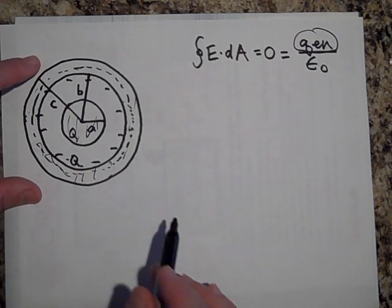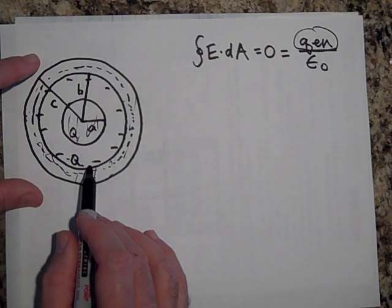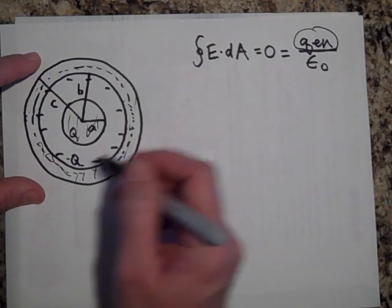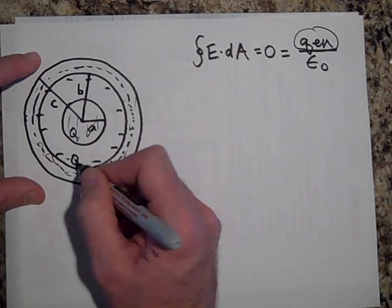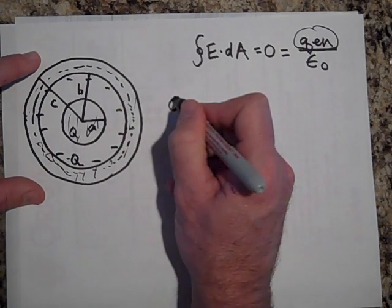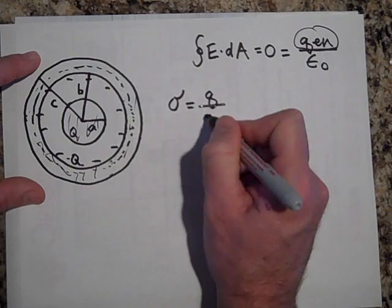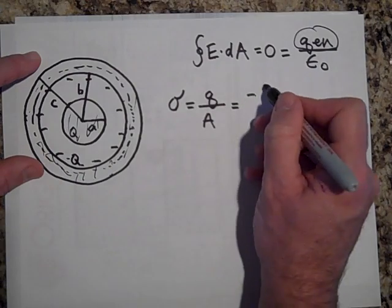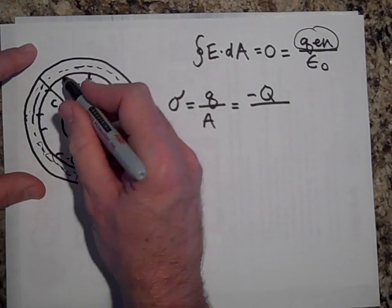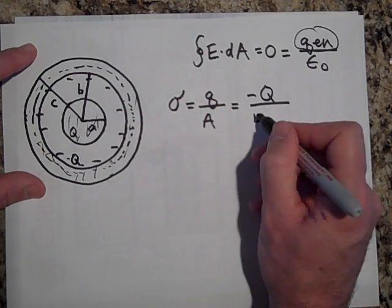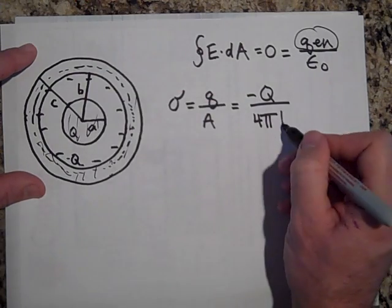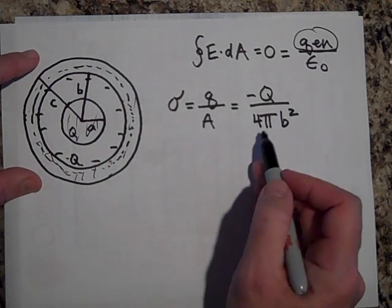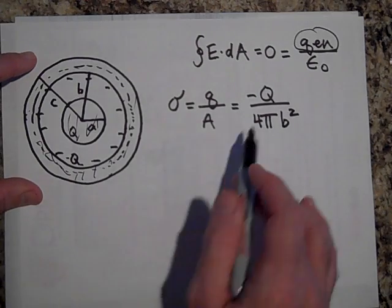Now sometimes they'll ask you what the net charge is on the inner, the inside surface. Well the inside surface right here, the charge density sigma, sigma is the charge per area. And if they wanted to know the sigma on the inner surface, it's going to equal negative Q over this area in here. So that area is four pi B squared. That's the area of a sphere. So it's negative Q divided by four pi B squared. So that's what the sigma is of that.